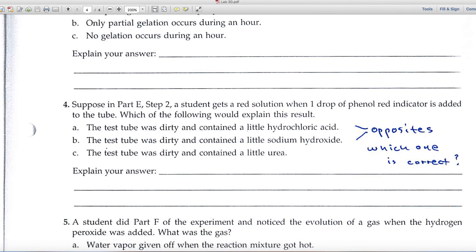Down here, number four, I've made a comment for you. It says, suppose in Part E a student gets a red solution with the phenyl red indicator. Which of the following would explain this result? As I looked at the responses, I realized that A and B are just opposites of one another.